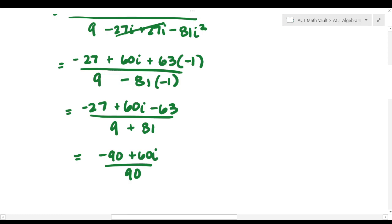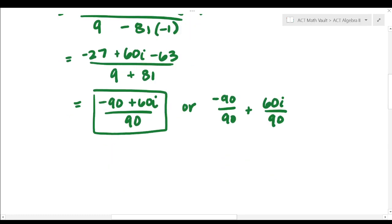Okay. So you might think that that's the final answer and it really is. But I have seen the ACT answer choices in a more simplified version that's like one step further. So you can take that 90 and 90 and put it over or under each term. So negative 90 over 90 plus the 60i over the 90.